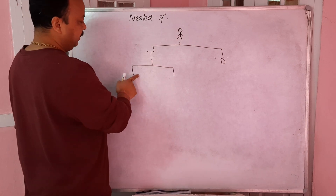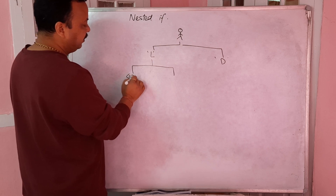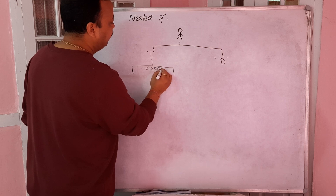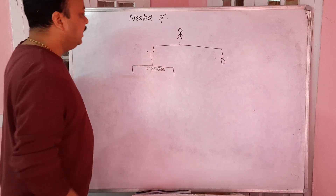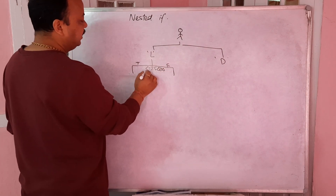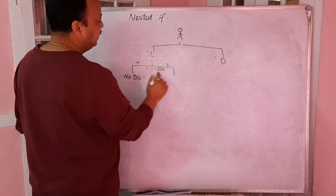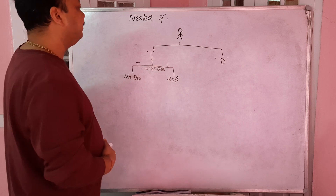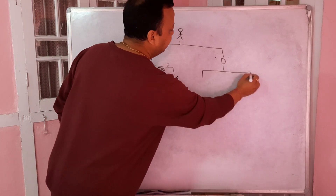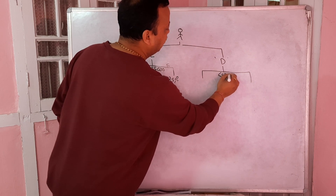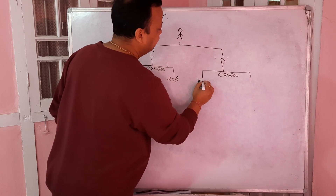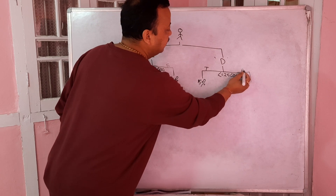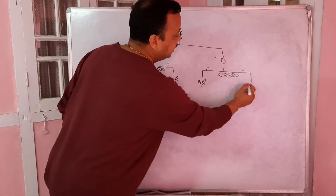If the budget is less than or equal to twenty-five thousand, there is no discount for a laptop. If the budget is more than twenty-five thousand, you may get a two-point-five percent discount. For a desktop, if your budget is less than twenty-five thousand you may get a five percent discount, and if it is more - say thirty thousand - you may get a ten percent discount.